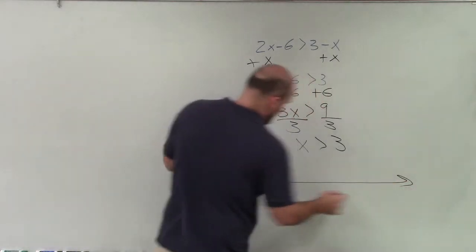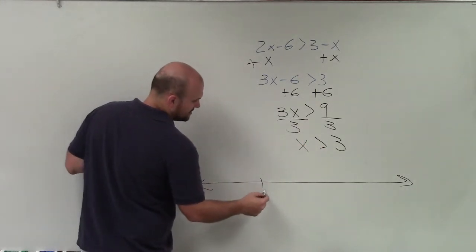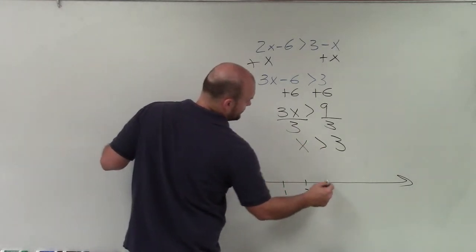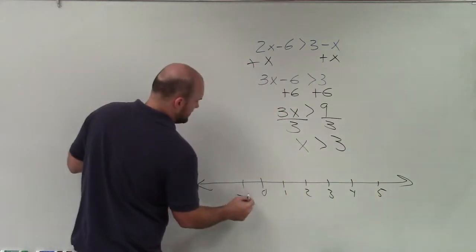So to graph the solution, what I basically want to make sure I have is a number line that's going to include my solution of 3. So I'll say 0, 1, 2, 3, 4, 5, negative 1. OK.